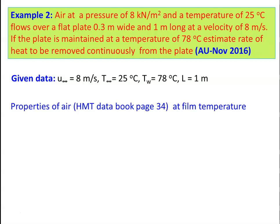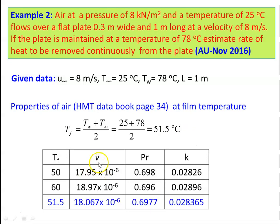Film temperature = (78 + 25) / 2 = 51.5°C. Properties of air at 51.5°C by interpolation: ν = 18.067 × 10⁻⁶ m²/s, Pr = 0.6977, k = 0.028365 W/m·K. Reynolds number = U∞·L / ν = 8 × 1 / (18.067 × 10⁻⁶) = 4.43 × 10⁵. Since Re < 5 × 10⁵, the flow is laminar.